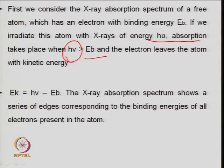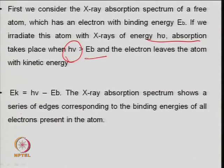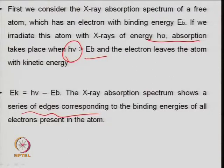The kinetic energy of the emitted electron is measured by the detector. There are methods by which kinetic energy can be measured, and then you can see a series corresponding to the binding energy of all the electrons present in the atom. XPS, depending upon the oxidation state, can give you all information about the surface structure.